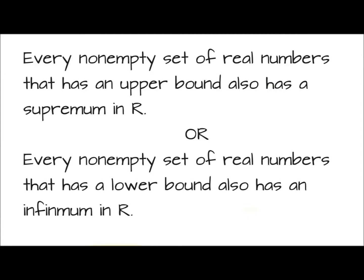Now we talk about the completeness property of R. The completeness property states that every non-empty set of real numbers that has an upper bound also has a supremum in R. This property is also called the supremum property. Correspondingly, there is the infimum property: every non-empty set of real numbers that has a lower bound must also have an infimum in R. This is the completeness property of the real numbers.